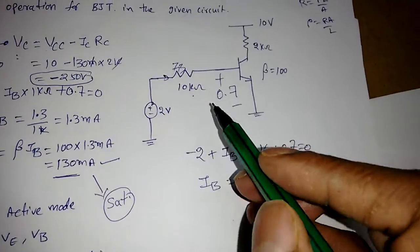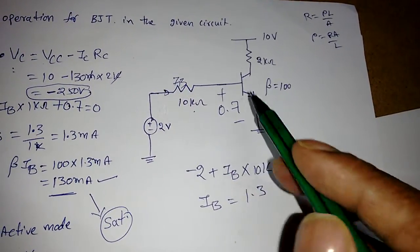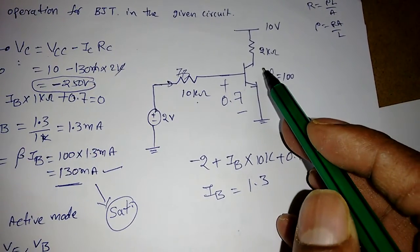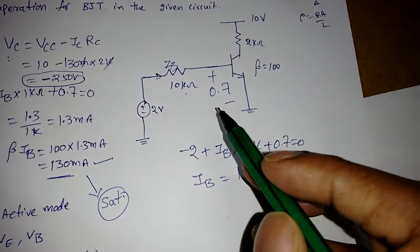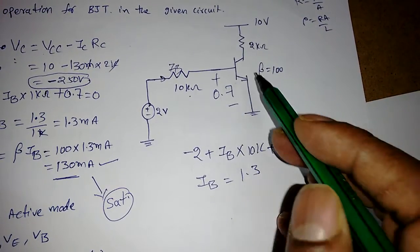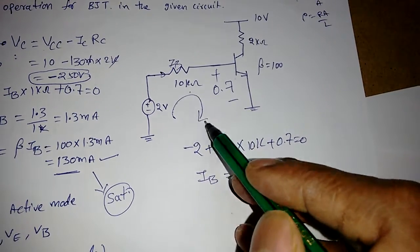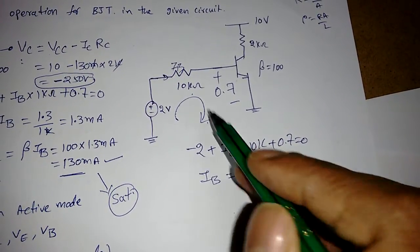Continuing from the previous lecture, for this circuit we need to find whether the transistor is in active, saturation, or cutoff. First, assume that the transistor is in active region. Applying KVL across this loop: -2 + IB × 10kΩ + 0.7 = 0.